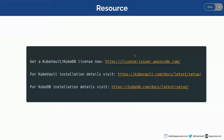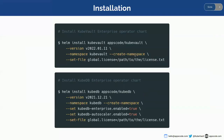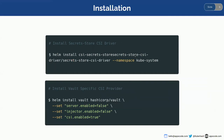First, here are some resource links for your convenience. You can get a QVault or QDB license and also find the installation process from the links provided here. I have already installed the QVault Enterprise Operator, the QDB Enterprise Operator, the Secrets Store CSI Driver, and the Vault-specific CSI Provider that I'm going to demonstrate in this demo.